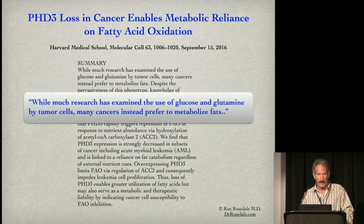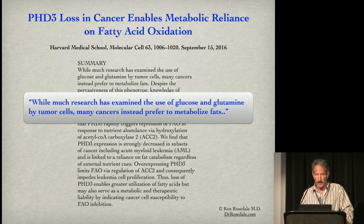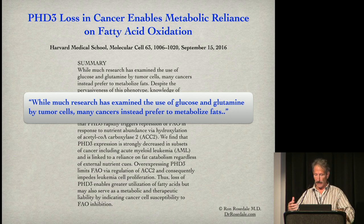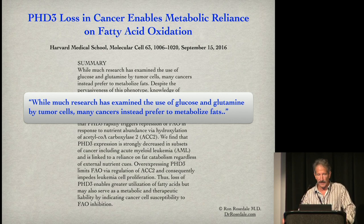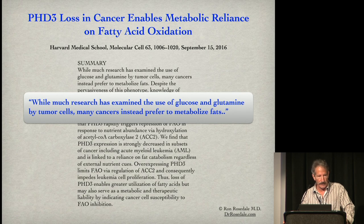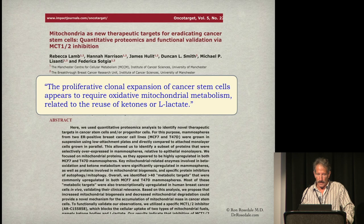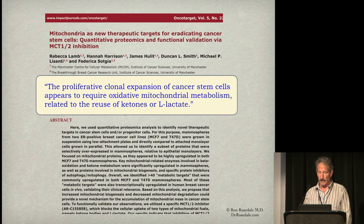Not just ketones and lactate and glutamine, but fatty acids. Many cancers use fatty acids, especially those with a ready supply, such as the omentum — the fat surrounding the pancreas. Pancreatic cancer utilizes fatty acid oxidation, as does breast cancer. Fatty acid oxidation is done exclusively in mitochondria. In particular, the proliferative clonal expansion of cancer stem cells appears to require mitochondrial metabolism related to the reuse of ketones and lactate.